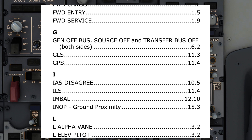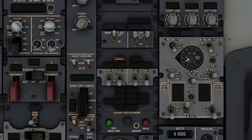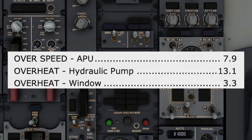The index doesn't have any entries listed under H, where you might look for a hydraulic issue, so where is the checklist? There are two ways to find it. Search for the illuminated word — in this case, 'overheat' — and there is the link to the checklist, under O.